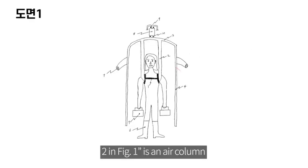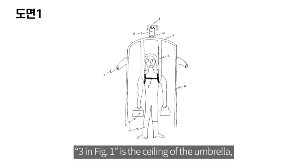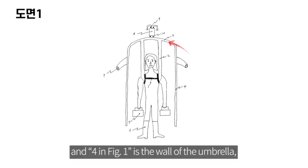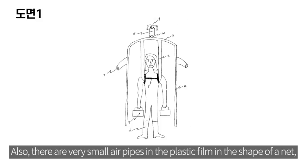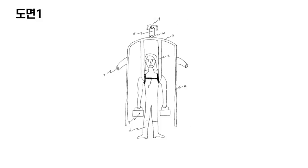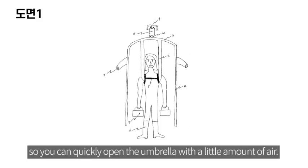2 in Figure 1 is an air column, 3 in Figure 1 is the ceiling of the umbrella, and 4 in Figure 1 is the wall of the umbrella, both of which are very thin vinyl films. Also, there are very small air pipes in the plastic film in the shape of a net, so you can quickly open the umbrella with a little amount of air.